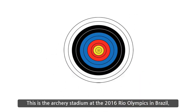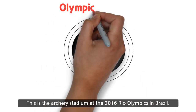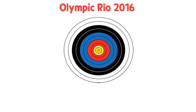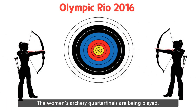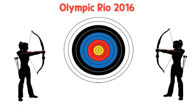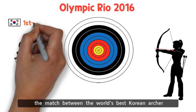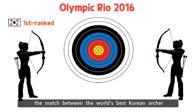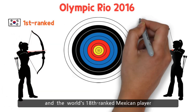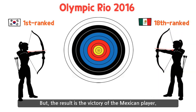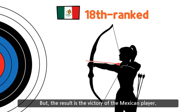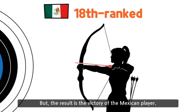This is the archery stadium at the 2016 Rio Olympics in Brazil. The women's archery quarter finals are being played. Among them, the match between the world's best Korean archer and the world's 18th ranked Mexican player looked like no surprise, but the result was the victory of the Mexican player. The key factor in this situation was the wind.